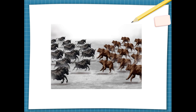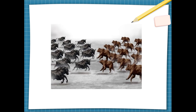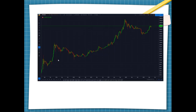A candle is constituted of a body, an open, a close, a high, a low, and wicks. You're going to get used to those terms. I'm going to try to help you understand this using the chart on screen.